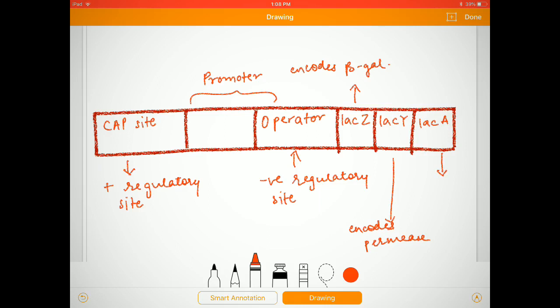Then there is lac a, which encodes transacetylase, which transfers acetyl group from acetyl-CoA to beta-galactosidase. Now we will see one by one what will happen if the cell is kept in an environment which contains glucose or lactose or less amount of glucose.